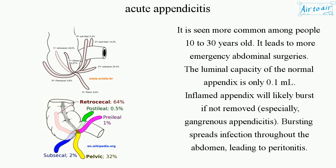The luminal capacity of the normal appendix is only 0.1 milliliters. An inflamed appendix will likely burst if not removed, especially in gangrenous appendicitis. Bursting spreads infection throughout the abdomen, leading to peritonitis.